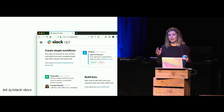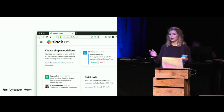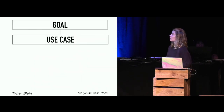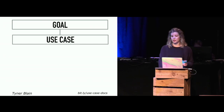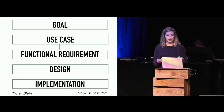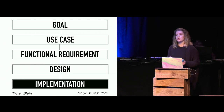Now that we generally understand what use case driven documentation is, let's look at a high level outline of this idea. When you want to develop a use case, you typically start with a goal. Then if you're using use case driven development or something similar, the rest of your workflow could end up looking something like this: you'll define the functional requirements, you'll design the product, and then you'll implement the feature. What most documentation is doing, however, is starting at this phase — implementation.